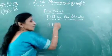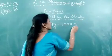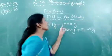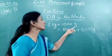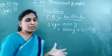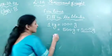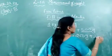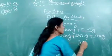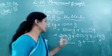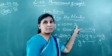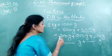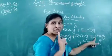In one kilogram, how many grams? 1000 grams. We can also write it as 500 grams plus 500 grams equals 1000 grams. Next: 200 grams plus 200 grams plus 200 grams equals 600 grams.